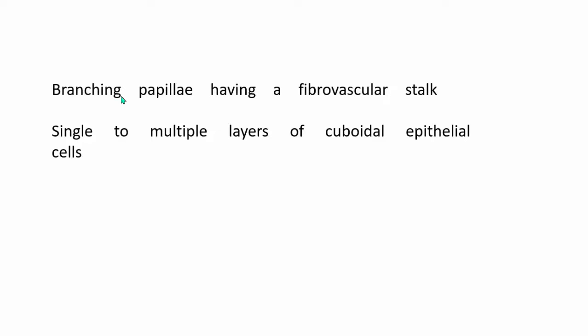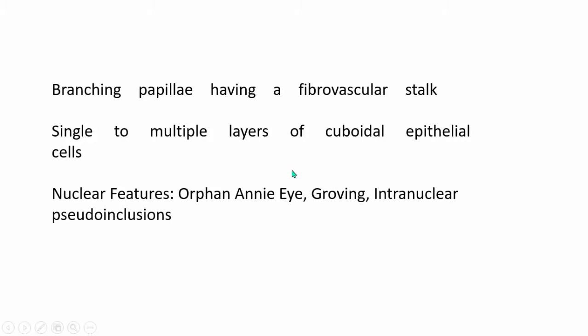To summarize, papillary carcinoma of the thyroid will have single or multiple layers of cuboidal epithelial cells lining branching papillae with a fibrovascular core. The nuclear features include the orphan Annie eye appearance, nuclear grooving, intranuclear pseudo-inclusions, and psammoma bodies.